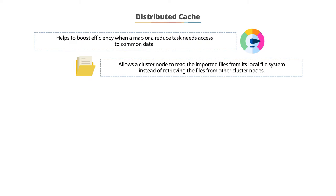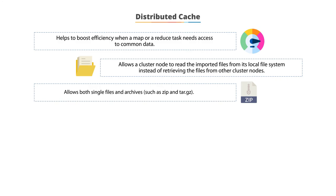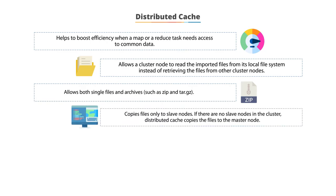It allows a cluster node to read the imported files from its local file system instead of retrieving the files from other cluster nodes in the environment. It allows both single files and archives such as zip and tar.gz. It copies files only to slave nodes. If there are no slave nodes in the cluster, then distributed cache copies the files to the master node.